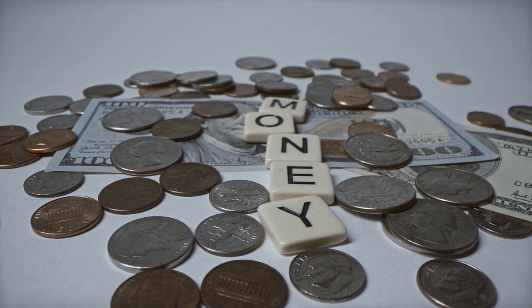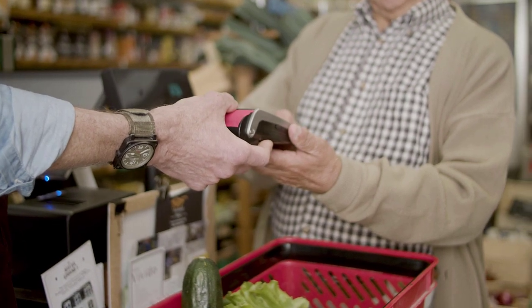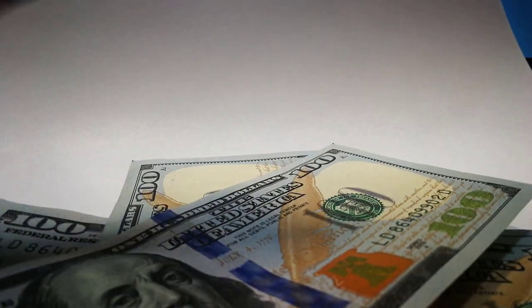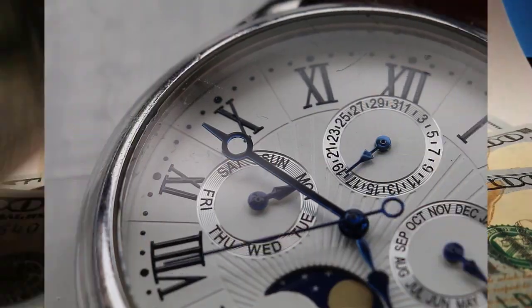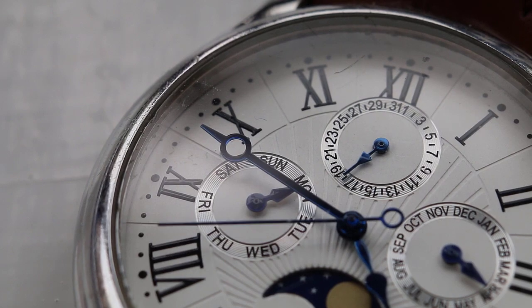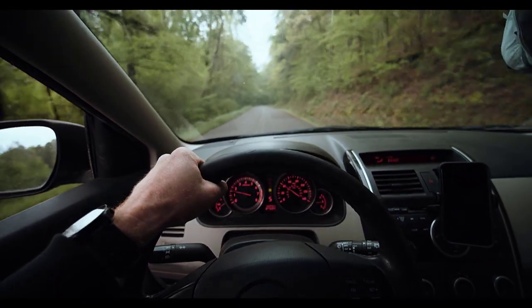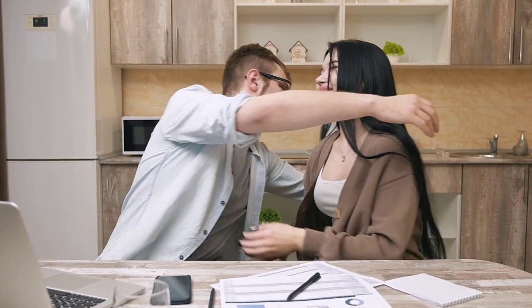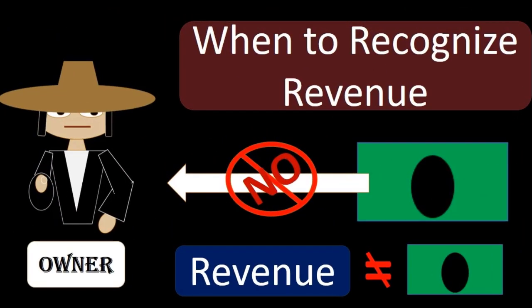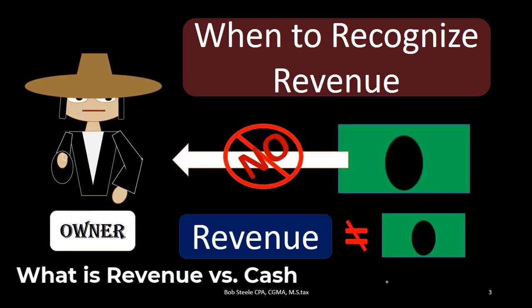Because cash is the most common form of payment, it is often assumed that cash is the same thing as revenue. It's also the case that in many transactions we will receive cash at the same point in time that revenue is earned. But the driving factor for when revenue should be recognized is when the work is done. The revenue recognition principle states we want to recognize revenue when work is done.